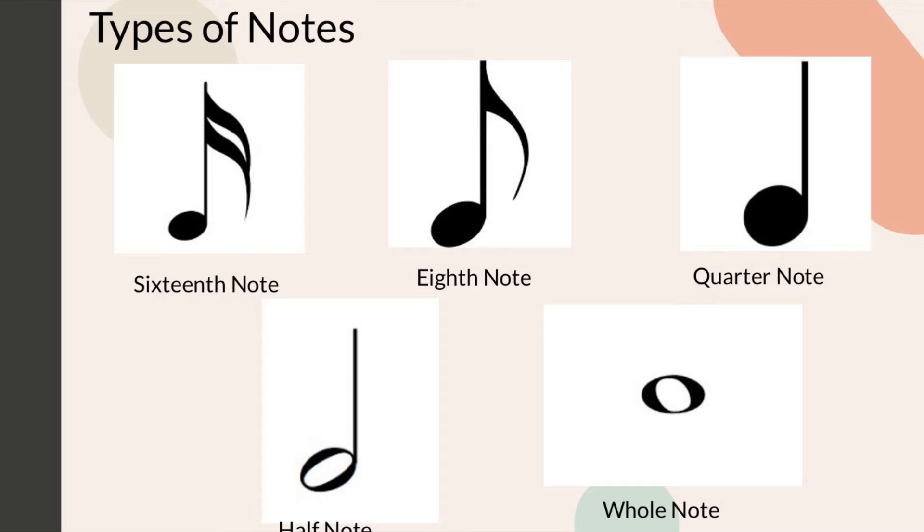So the 16th note is half of the length of the 8th note. The 8th note is half the length of the quarter note. The half note is half of the whole note. And the whole note is all four beats.